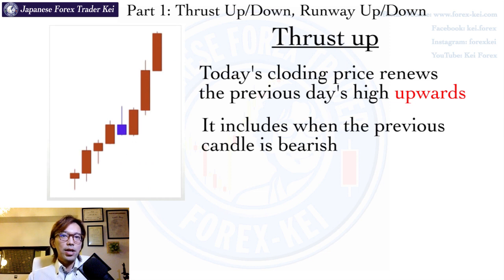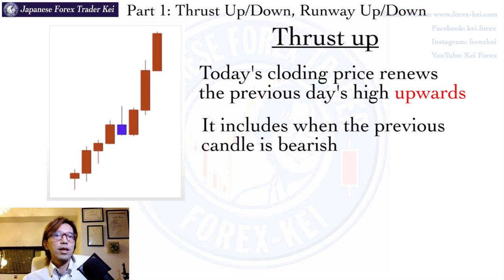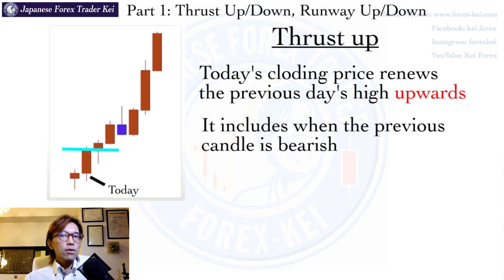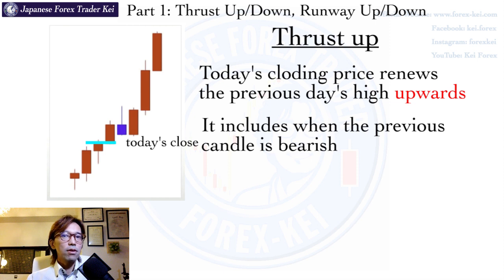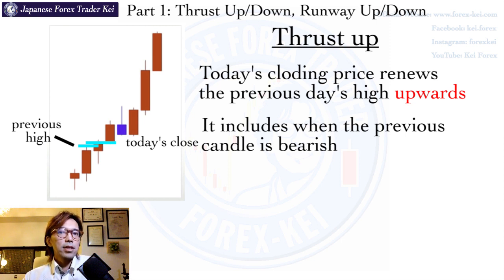First, there's a pattern called Thrust Up. This means when today's closing price breaks the previous high upwards — simply when the price renews the previous high upwards, it's called Thrust Up. It also applies when the previous candle is bearish. So if this second candle is today, today's closing price is right here, and when this closing price is renewing the previous high, it's called Thrust Up. When today's closing price renewed the previous close price upwards, this pattern is called Thrust Up.